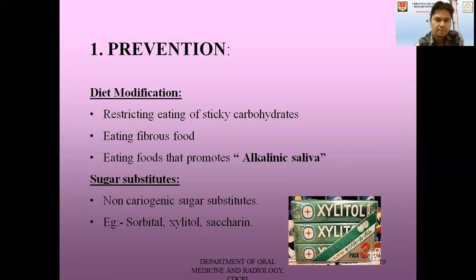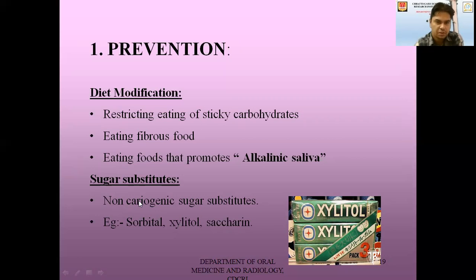So how do we prevent caries? Different methods by which we can prevent caries: first is diet modification, where we restrict eating of sticky carbohydrates, reduce the frequency of intake and type of carbohydrate. We eat fibrous food, not sticky food, and food that promotes alkaline saliva or promotes release of more saliva to flush out any acid or impacted food. Then there are sugar substitutes — we should go for non-cariogenic sugar substitutes, for example sorbitol, xylitol, and saccharin.